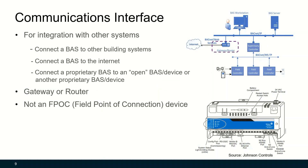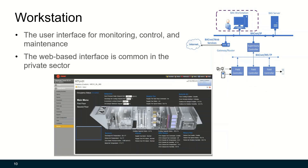Let's look at some key components. A communications interface connects the building automation system with the outside world — it is usually a gateway or router. A communications interface is not an FPOC (field point of connection) device, which is typically placed elsewhere in the architecture.